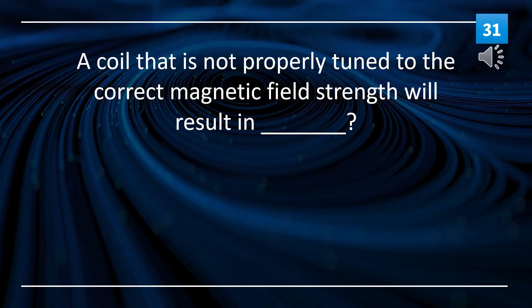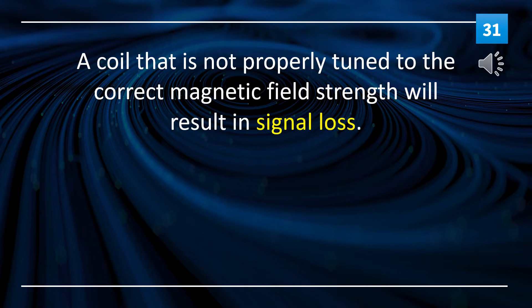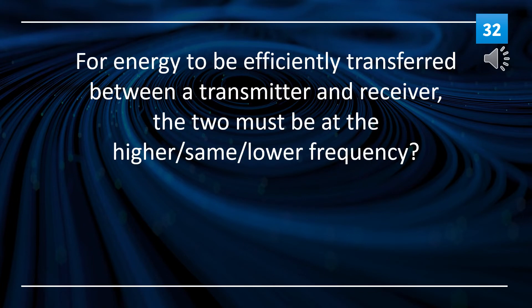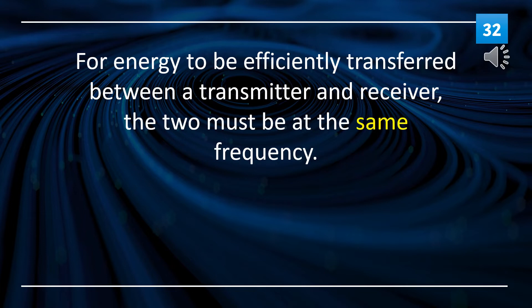A coil that is not properly tuned to the correct magnetic field strength will result in signal loss. For energy to be efficiently transferred between a transmitter and receiver, the two must be at the same frequency.